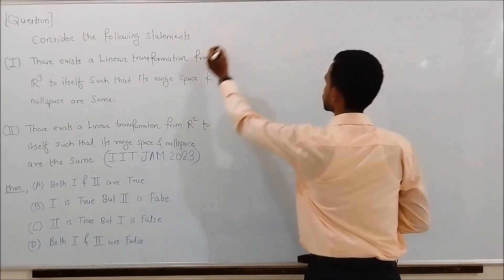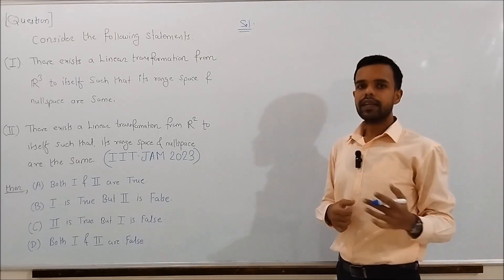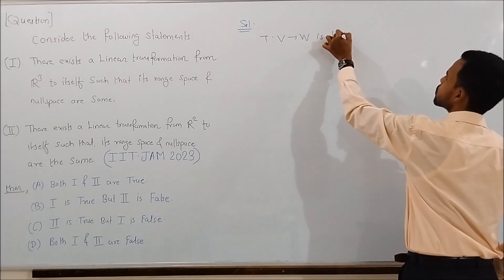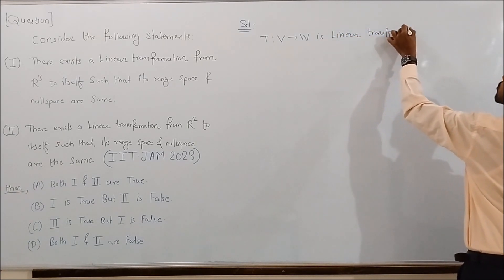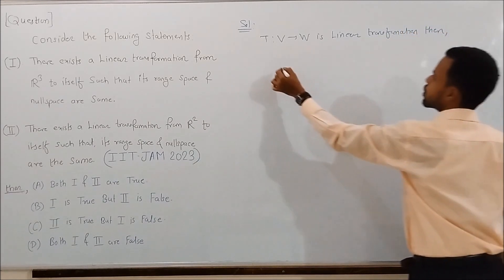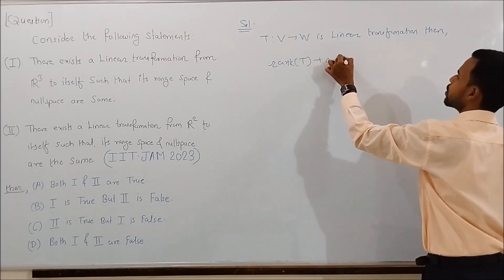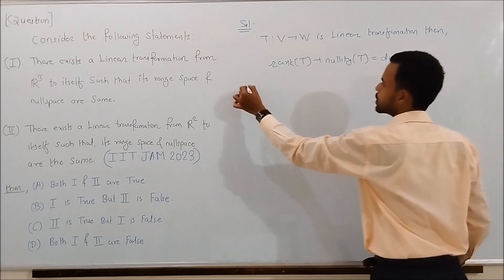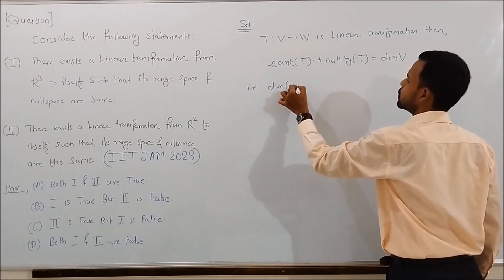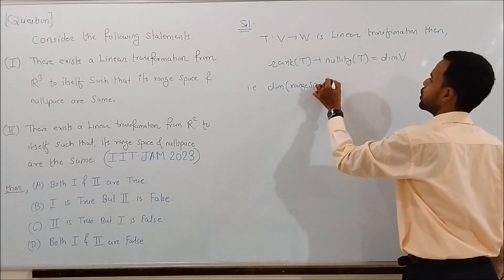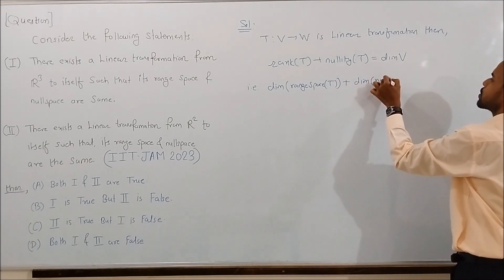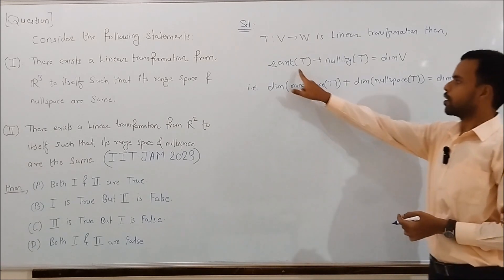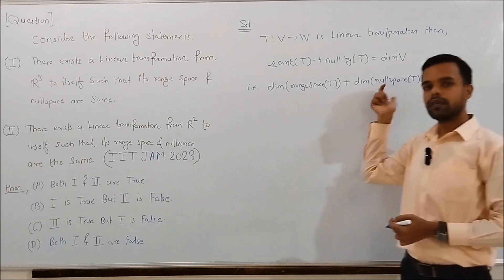Let's start the solution. We know by the Rank Nullity Theorem that if T from V to W is a linear transformation, then Rank of T plus Nullity of T equals the dimension of V. That is, dimension of Range Space of T plus dimension of Null Space of T equals dimension of V.